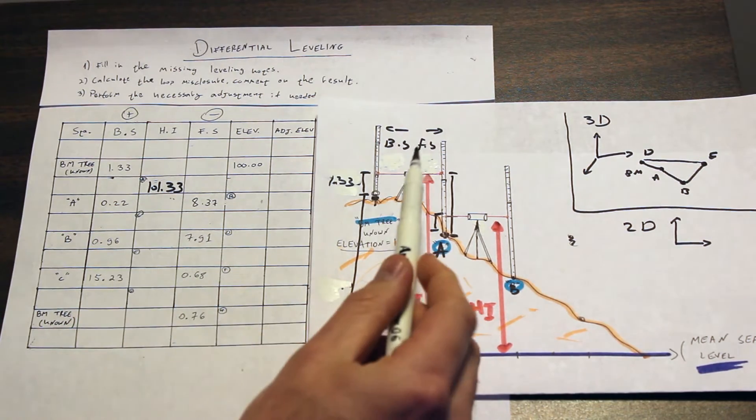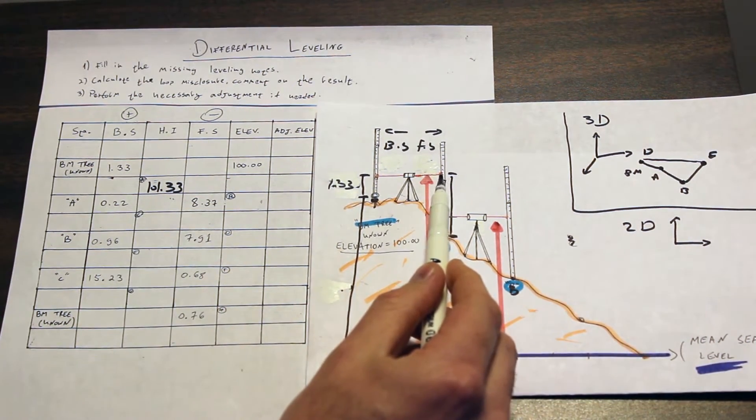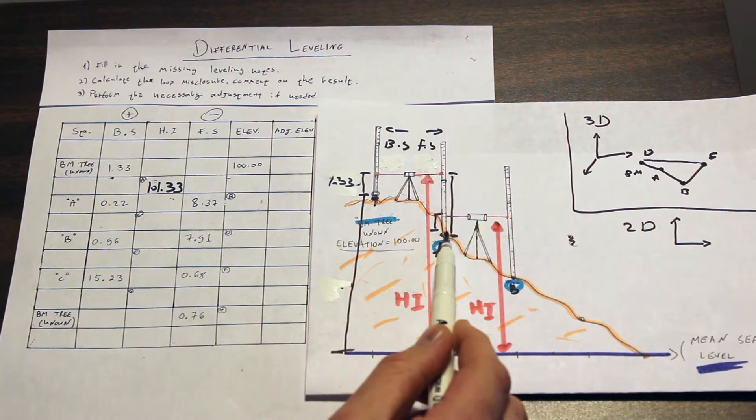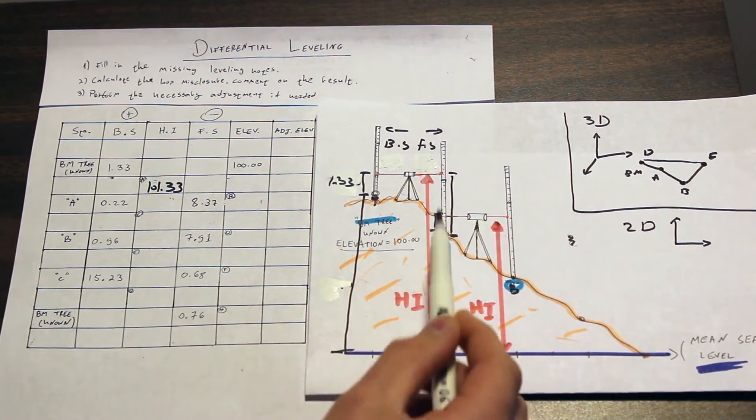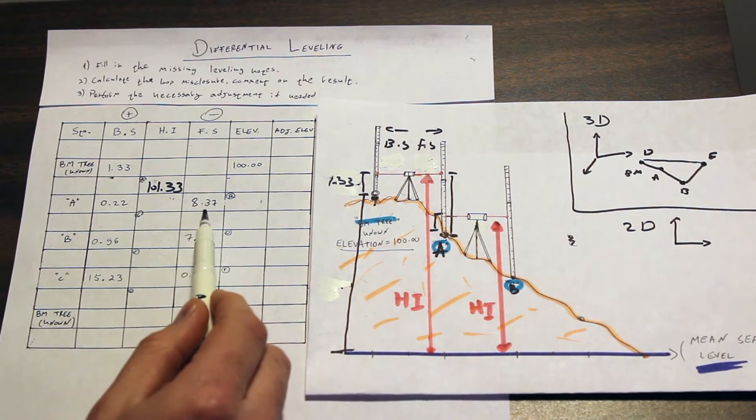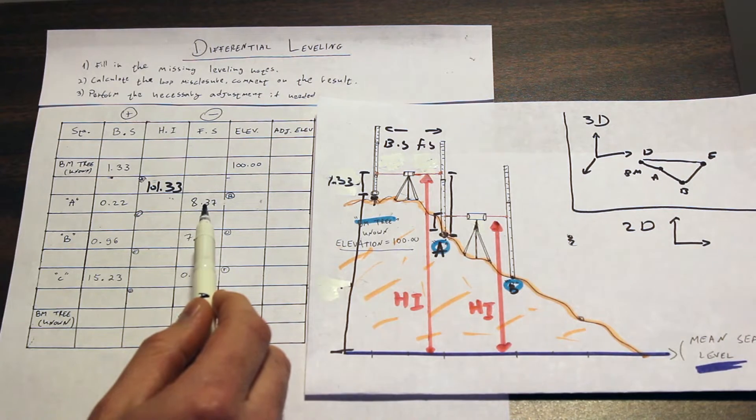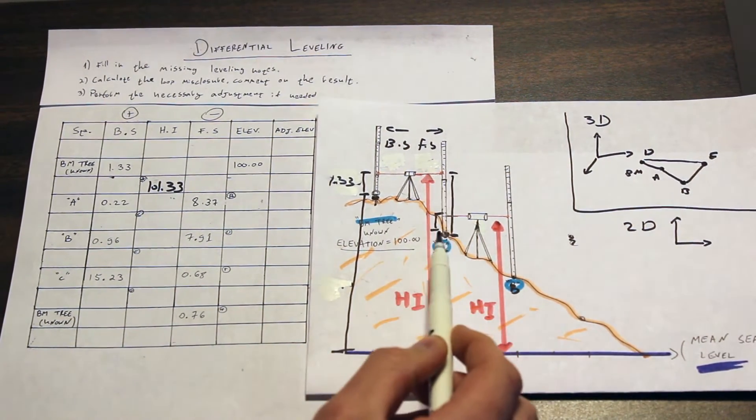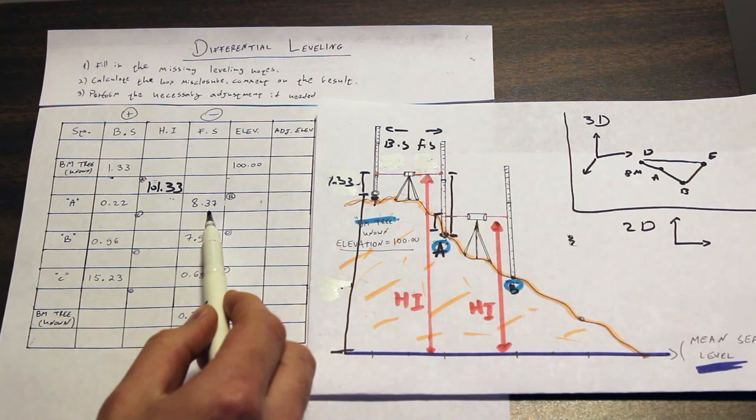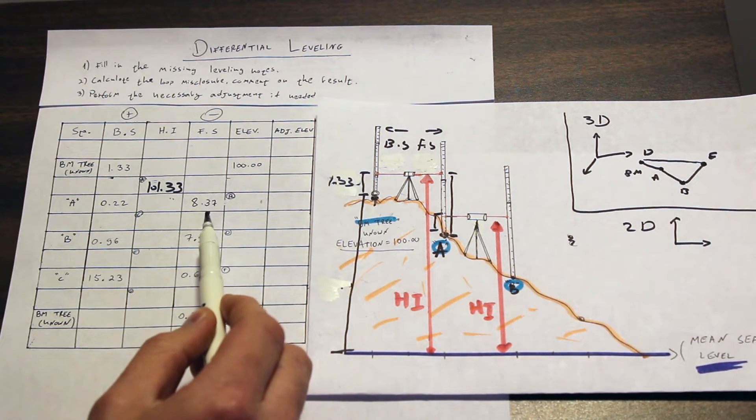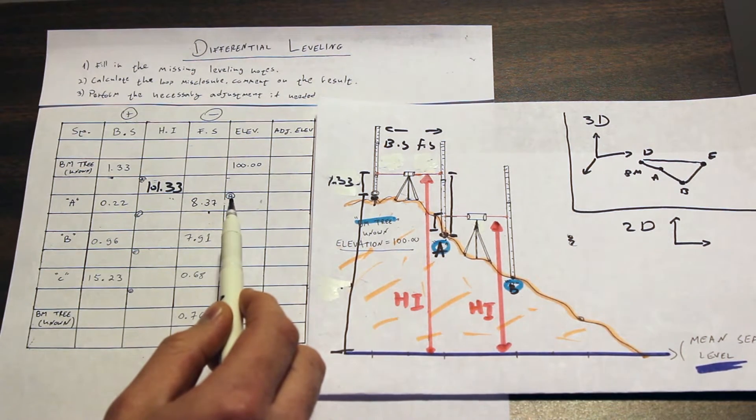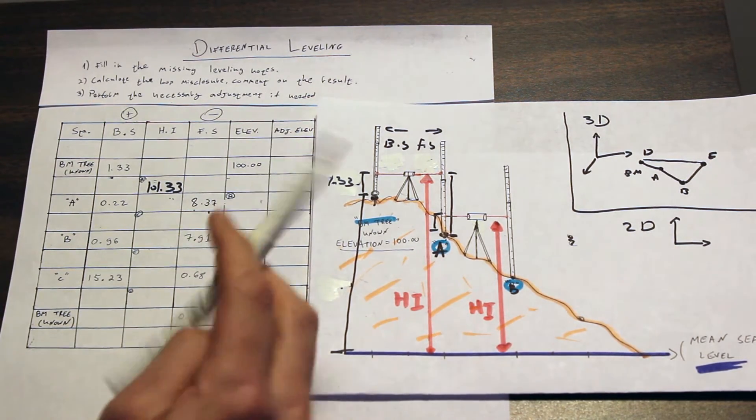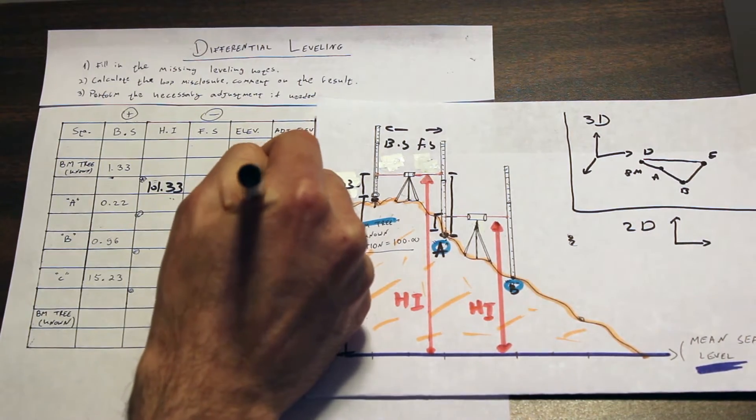Now we are taking the foresight. We are taking another shot to the next point that we want to figure out its elevation. Our person is standing, holding the rod at the next point that we are going to shoot from, and the device gave us an answer of 8.37 meters. What does that mean? It means that if we take this pink arrow, the height of the instrument, minus the height that we got right now, minus the 8.37 meters that we got now, we will get the elevation at 0.8. So 101.33 minus 8.37 meters gives us 92.96 meters.